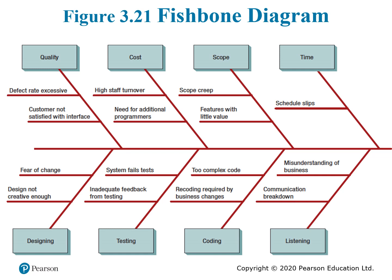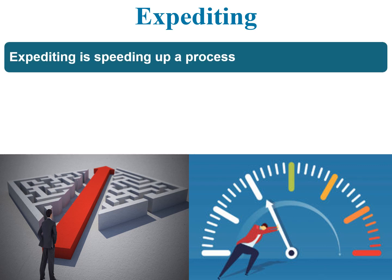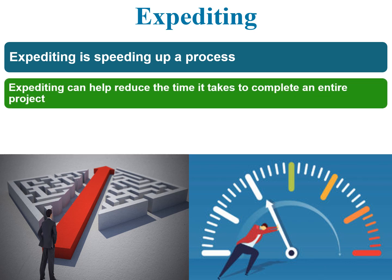Figure 3.21 shows another fishbone diagram example. In terms of quality, issues include defect rate, excessive customer dissatisfaction with the interface. In terms of cost, issues include high staff turnover and the need for additional programmers. These causes drive project risk effects. Another project management concept is expediting — speeding up the process without affecting quality of the outcome. Expediting can help reduce the time it takes to complete an entire project, and expedited activities must be on the critical path.